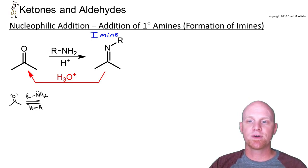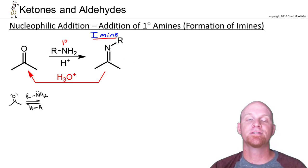So in this case, with a primary amine here, we're going to get what's called an imine. And the hallmark of an imine is that you've got a carbon-nitrogen double bond here. So in place of your carbon-oxygen double bond, you've got a carbon-nitrogen double bond.